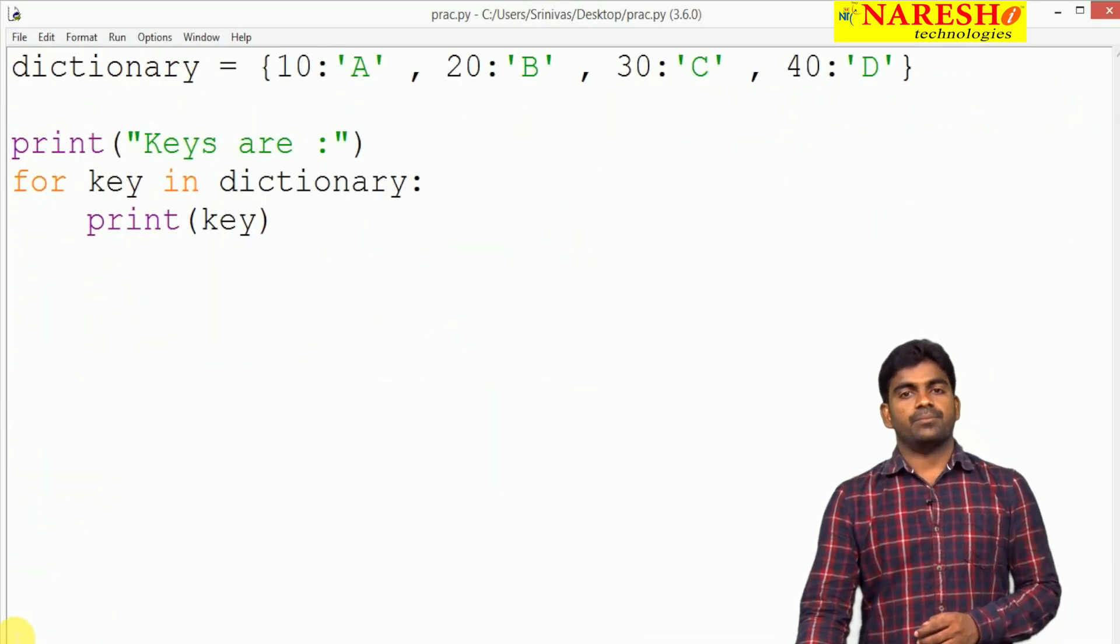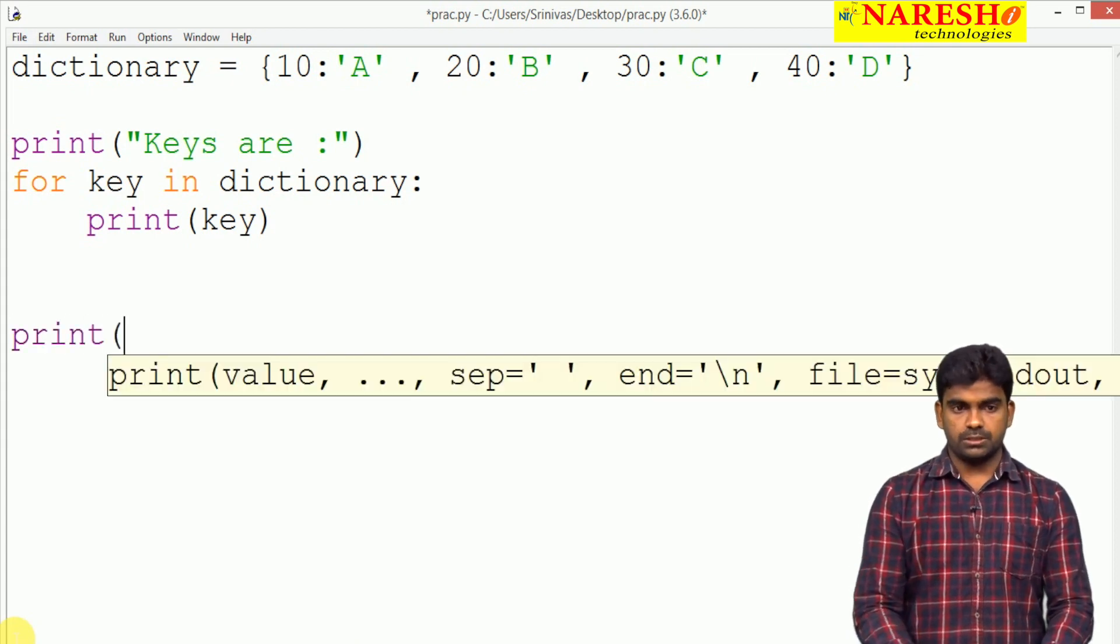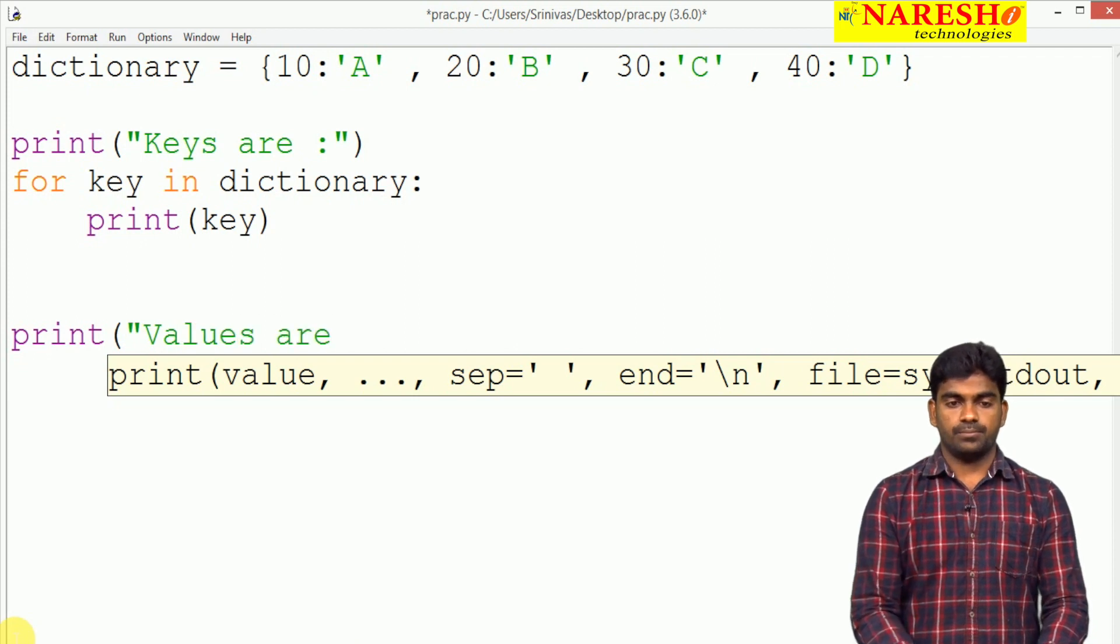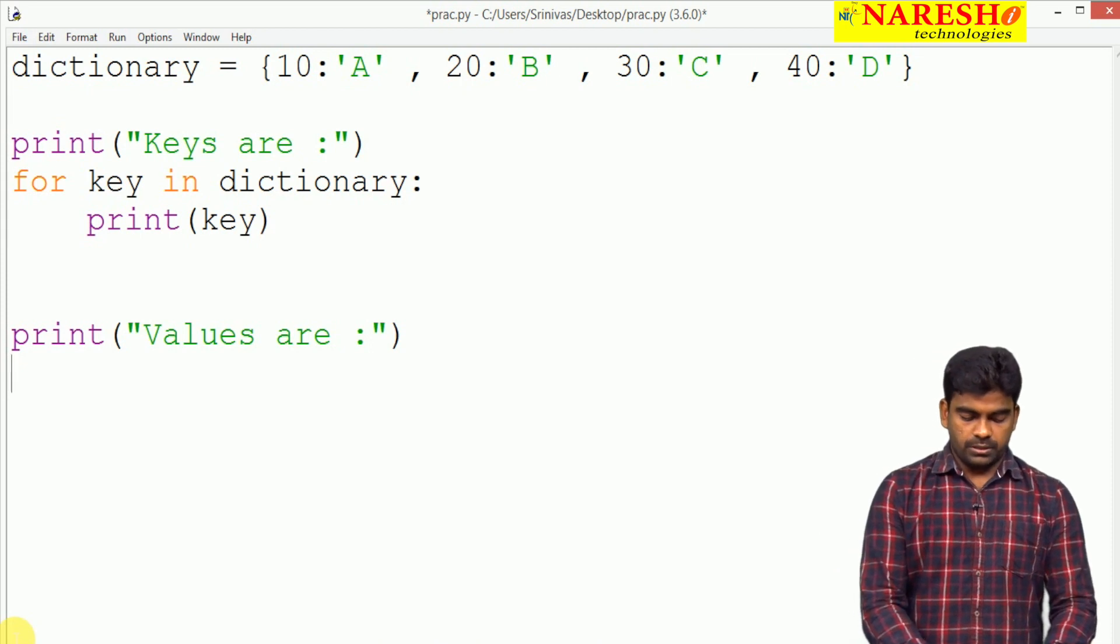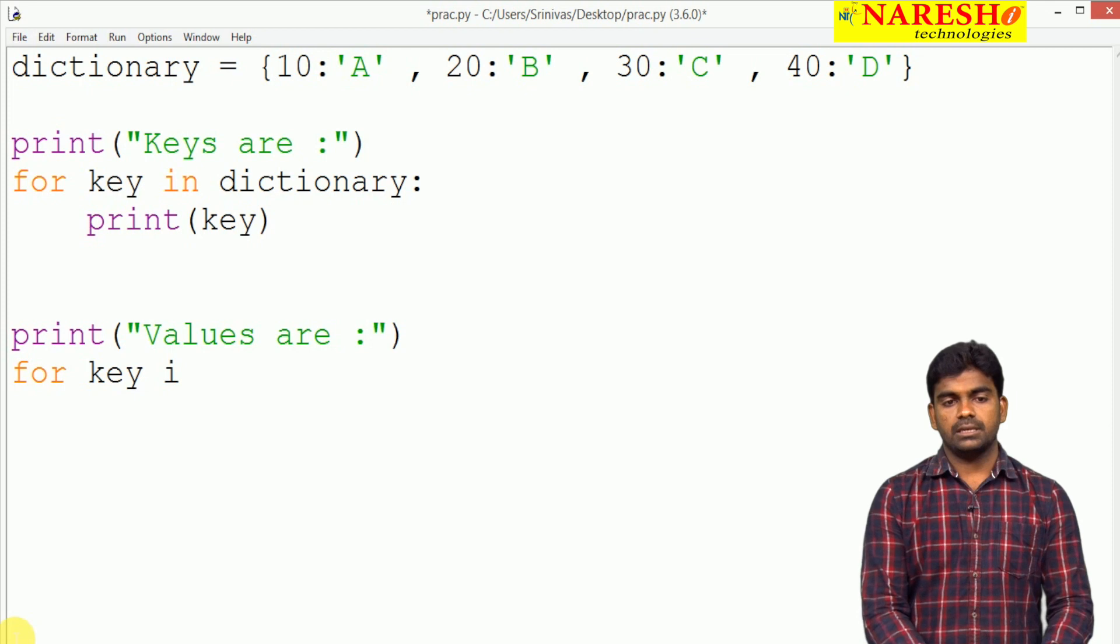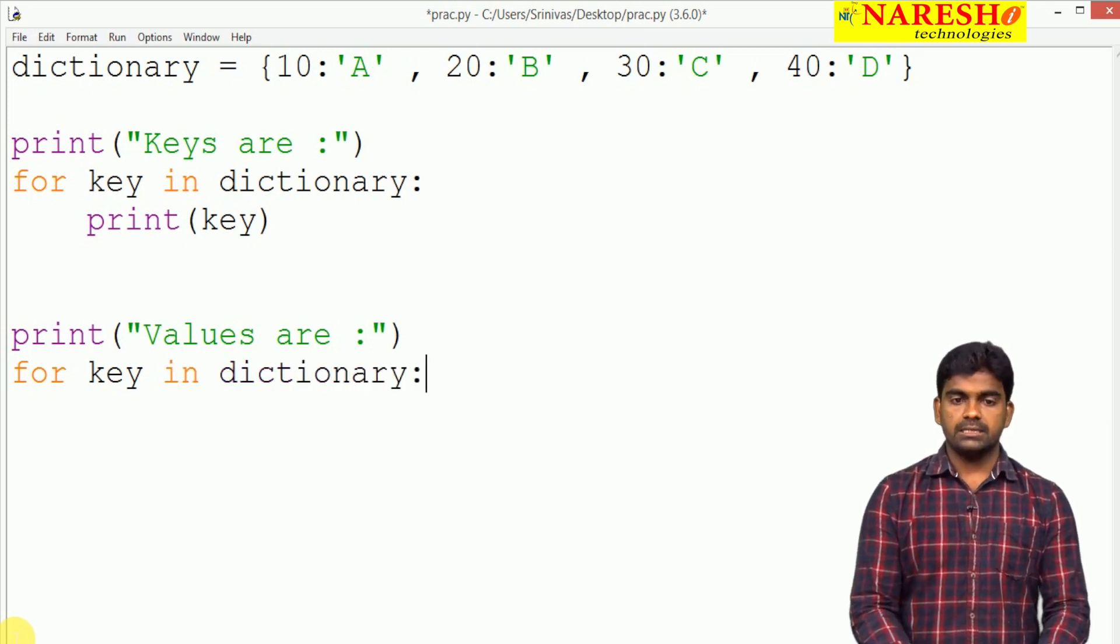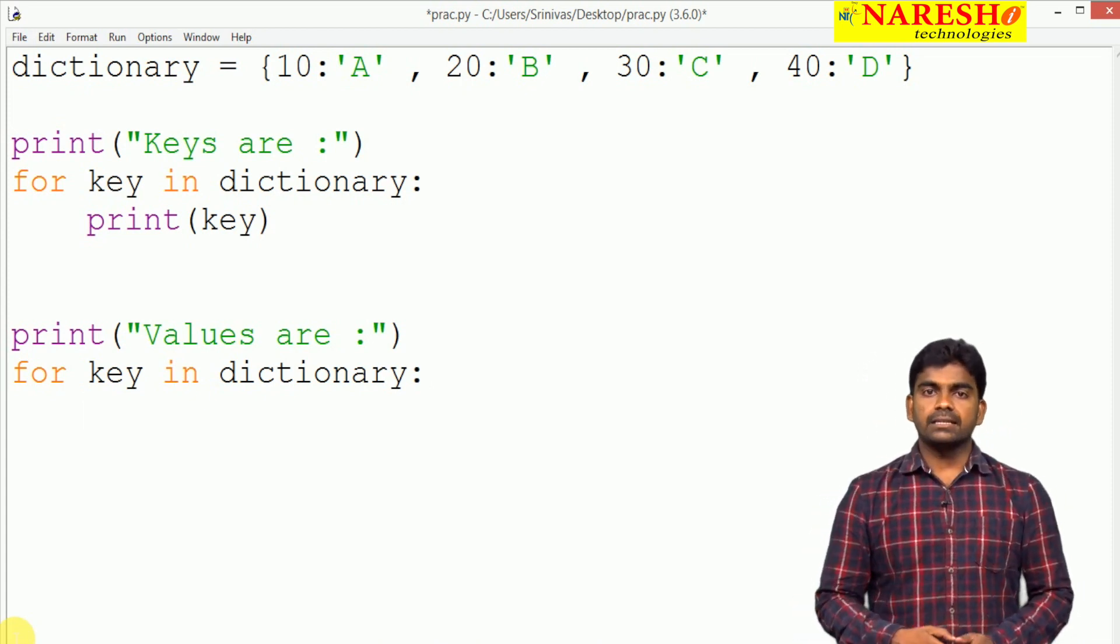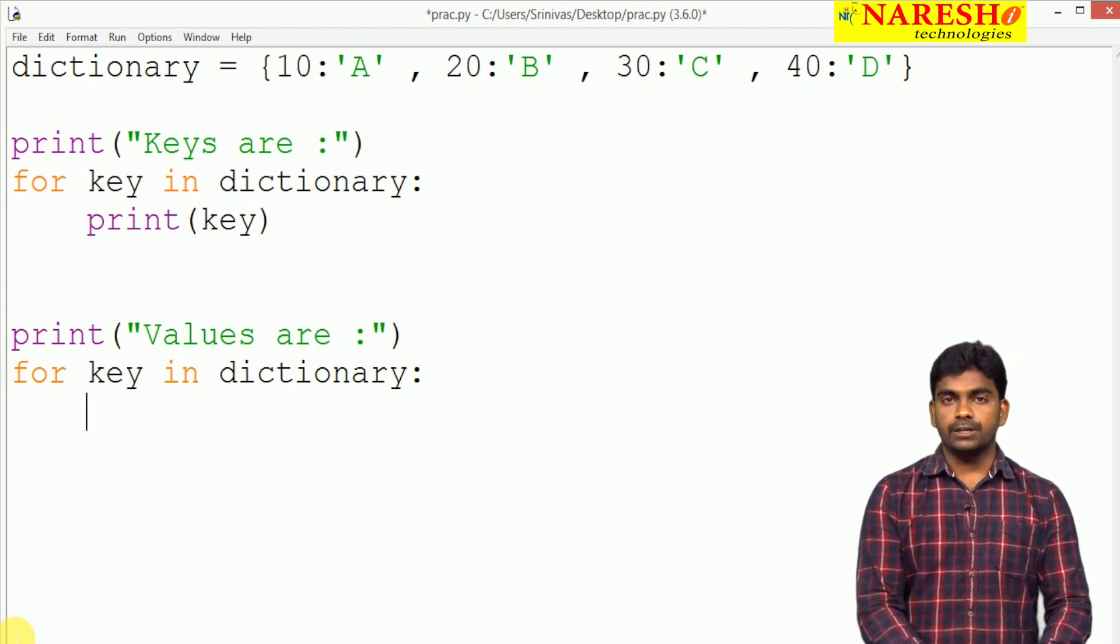Now I want to process elements, I want to process values. Print values are. Same story, first we should collect the key only, key in dictionary. Values we cannot process, only keys we can process.